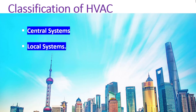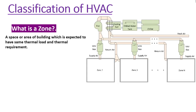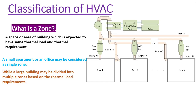HVAC systems can be classified as central systems and local or unitary systems. Before going into details, we must understand what a zone is. A zone is a space or area of a building which is expected to have the same thermal load and thermal requirement. A small apartment or office may be considered a single zone as they may have the same thermal load requirement, while a large building may be divided into multiple zones.